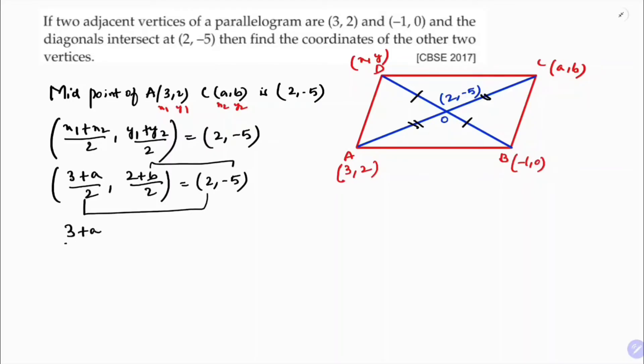So (3+a)/2 = 2. Therefore 3+a = 4, because 2 times 2. So a is 4-3, the value of a is 1.